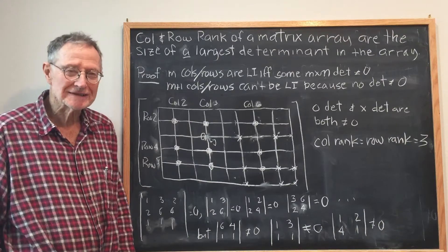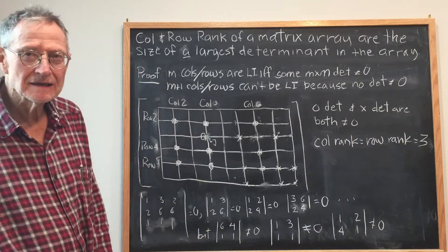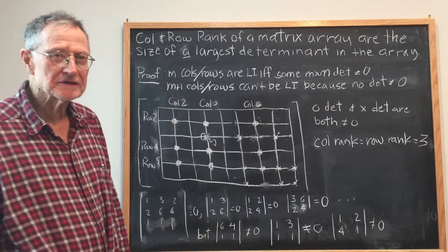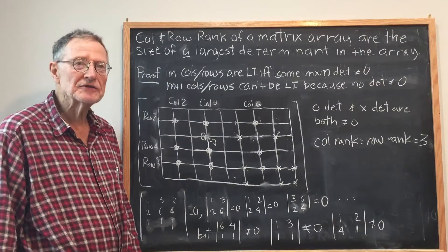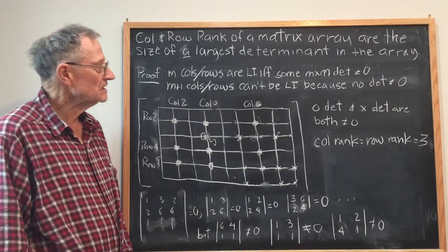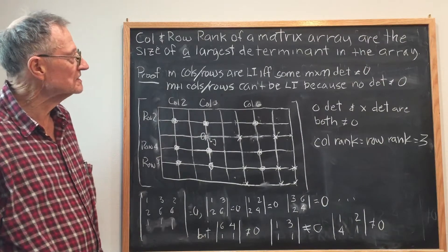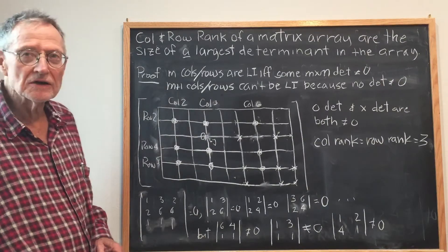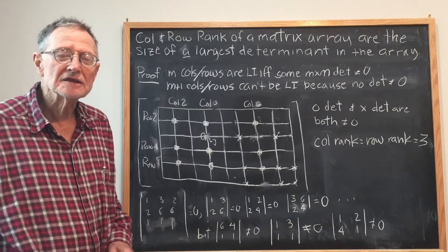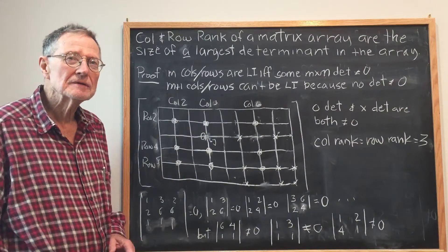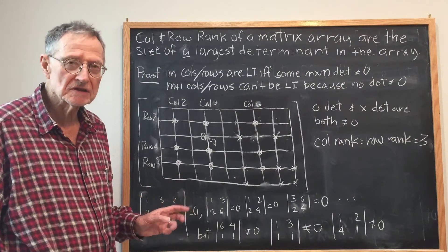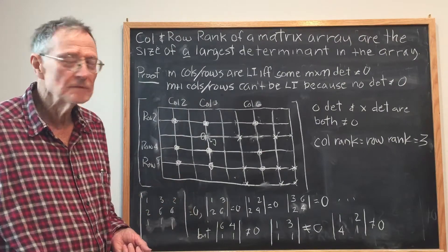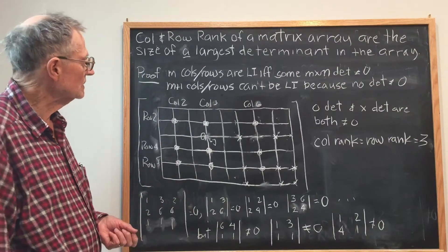Hello. I'd like to show that the column rank of a matrix is equal to the row rank of a matrix, and that is equal to the size of the largest determinant in the array which is unequal to zero.